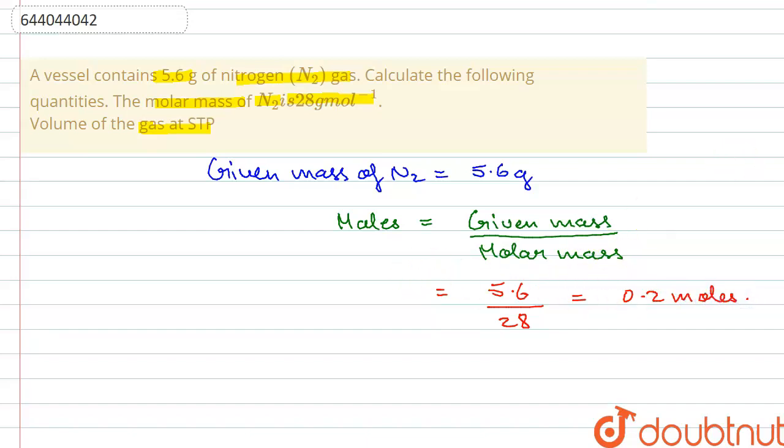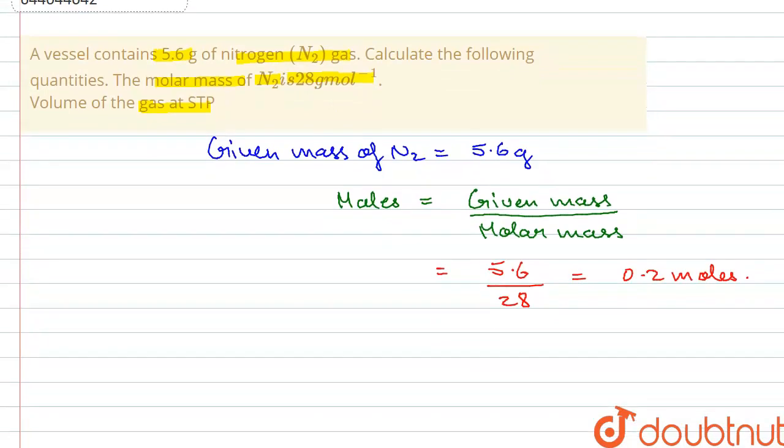Now, this is the number of moles that we have obtained. Now we have to calculate the volume of the gas at STP. So for that we have a formula for calculating the number of moles which has volume in it, that is given volume upon 22.4.